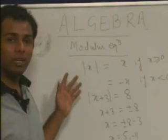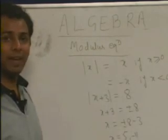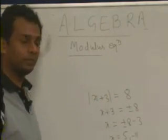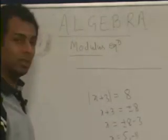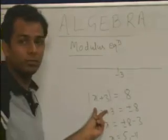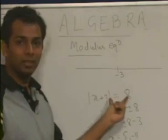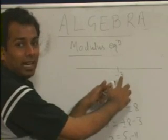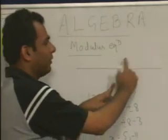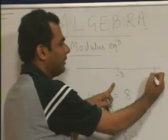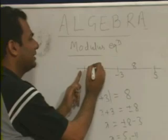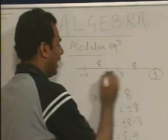The next point is how to solve modulus equations using a number line. For mod of x plus 3 equal to 8, the critical point is where x plus 3 equals 0, giving x equal to minus 3. From minus 3, cover a distance of 8 to the right: minus 3 plus 8 gives 5. Cover 8 to the left: minus 3 minus 8 gives minus 11. The two solutions are 5 and minus 11.